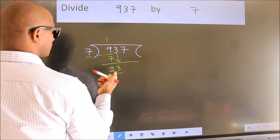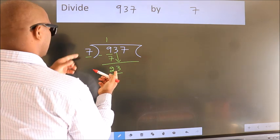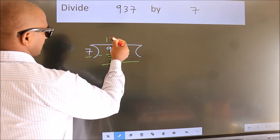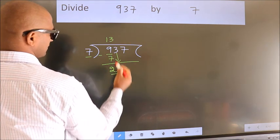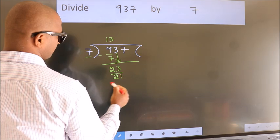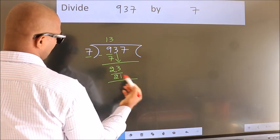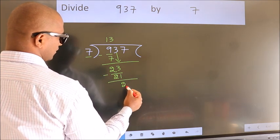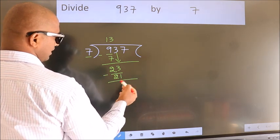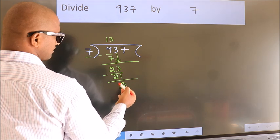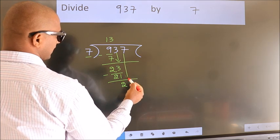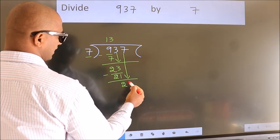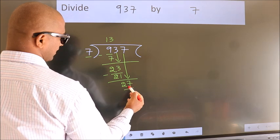A number close to 23 in the 7 times table is 7 threes 21. Now we subtract — we get 2. After this, bring down the beside number. So 7 comes down, giving us 27.